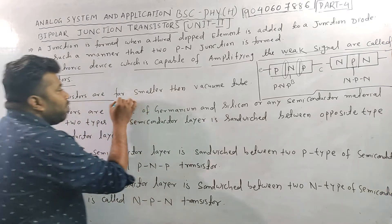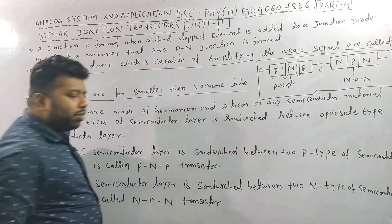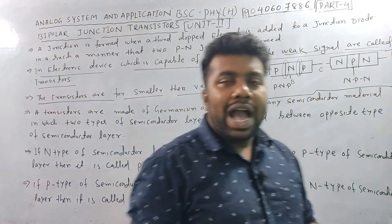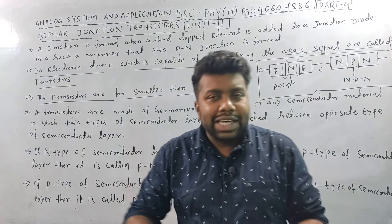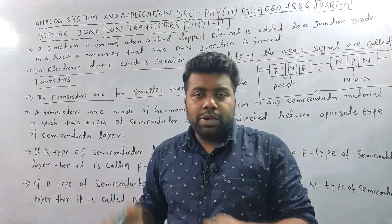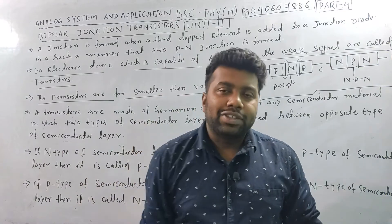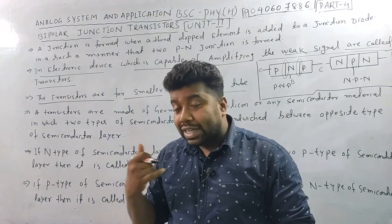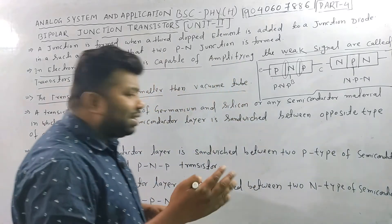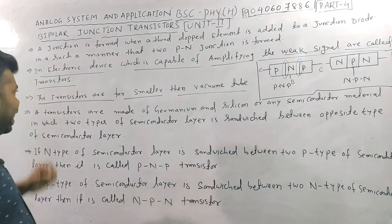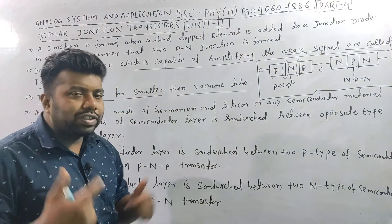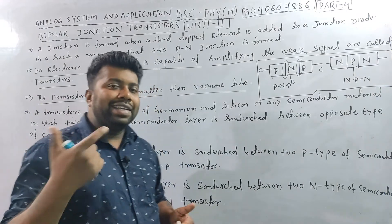Transistors are far smaller than vacuum tubes. The vacuum tubes are large. The transistor makes devices smaller and can be used in ICs — integrated circuit-based devices.